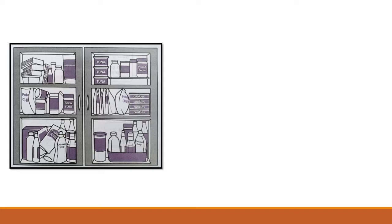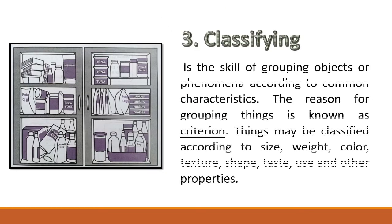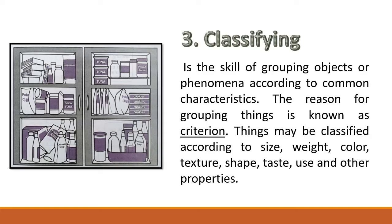Look at the shelves of grocery goods in the picture. In which shelf would it be easier to find the item you are looking for? Goods in grocery stores, beans in dry goods stores, and vegetables in the market are sold separately and in groups — these materials are classified into groups. Our next science process skill is classifying. Classifying is the skill of grouping objects or phenomena according to common characteristics. The reason for grouping things is known as criterion. Things may be classified according to size, weight, color, texture, shape, taste, use, and other properties.